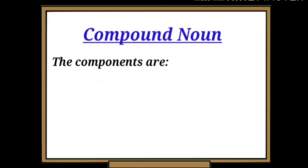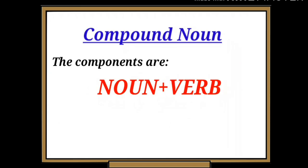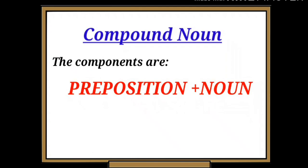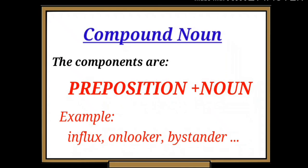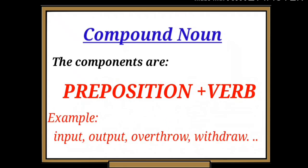Next components are verb plus noun. For example: swimming pool, running race, wrestling ring, washing machine, playground, etc. Look at the examples - first word is verb and second one is noun. Next components are noun plus verb. For example: sunset, snowfall, haircut, etc. Next: preposition plus noun. For example: influx, onlooker, bystander, etc. Next components are preposition plus verb. For example: input, output, overthrow, withdraw, etc.